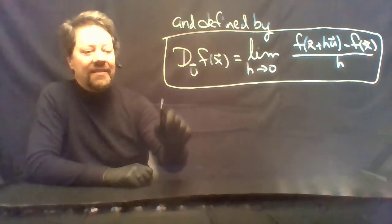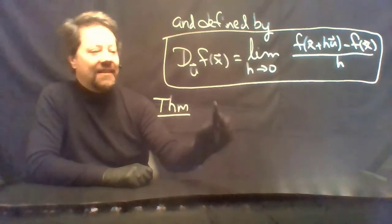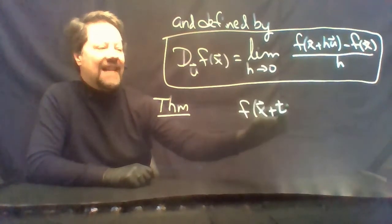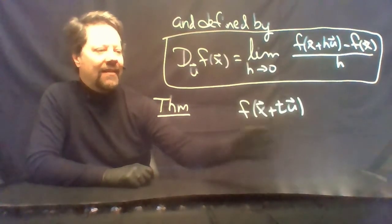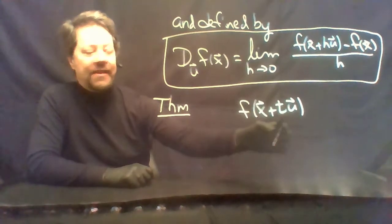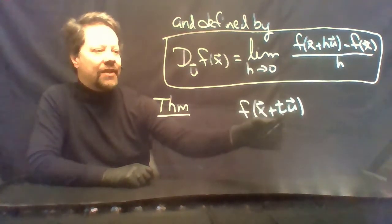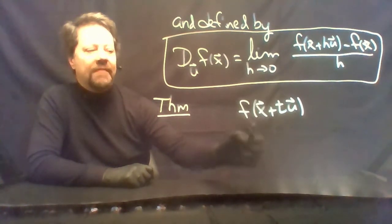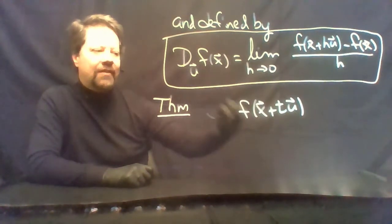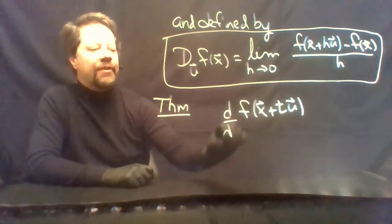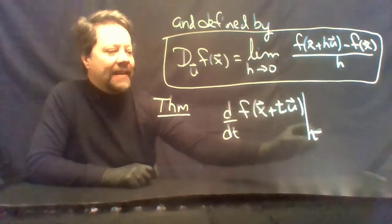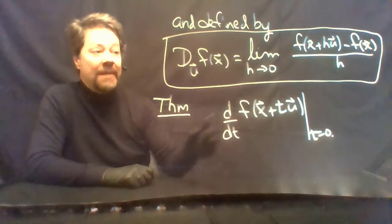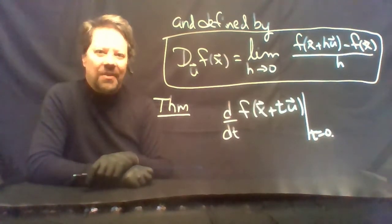I'd like to point out that if we look at the function f of x plus t times u, we're putting a straight line in the domain in the direction of u that passes through x. When we evaluate the function there, we'll have the heights all along that curve. If we take the derivative with respect to t and evaluate it at t equals zero, we should get the slope of the tangent line of that curve, which should be exactly equal to the directional derivative.